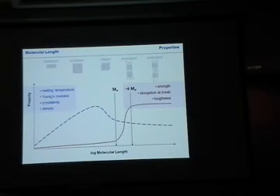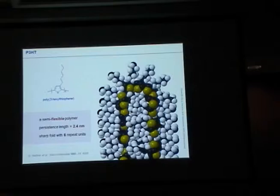It saturates once you have four times the molecular weight between entanglement, meaning you have three entanglements per chain. So just as an example — if you want to have a look at your own polymers, where does this transition occur?